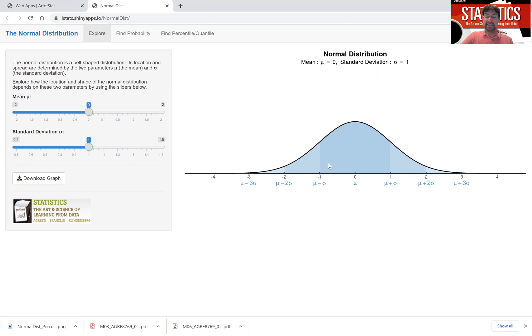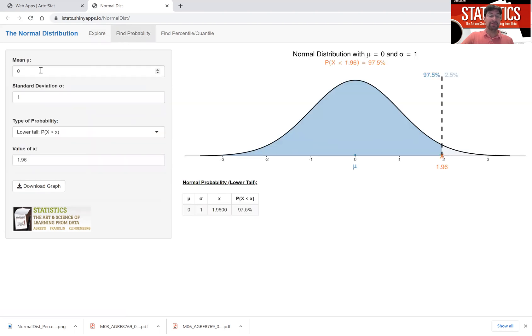To actually find probabilities for the normal distribution go to the Find Probability tab. Let's use an example from chapter five and chapter six in the textbook where we look at the talk time of cell phones. Suppose the talk time of cell phones, how long you can stay on the phone continuously and just talk before the battery dies. Suppose that distribution follows a normal distribution with a mean of 330 minutes and a standard deviation of 80 minutes. And so we get a normal distribution with a mean of 330 and a standard deviation of 80 like in this picture.